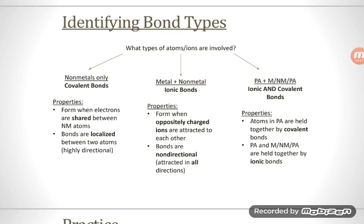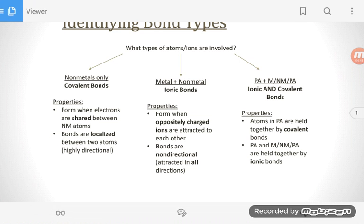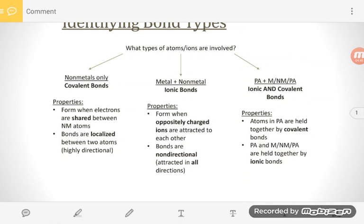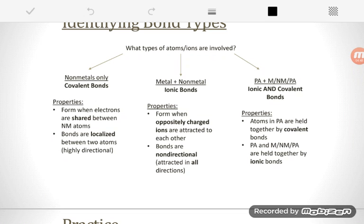Polyatomic ions are a little bit tricky because they're actually a group of atoms that are held together by covalent bonds that form a large ion. So for instance, NO3, the nitrate ion, that itself, the nitrogen and three oxygens, are held together by covalent bonds.